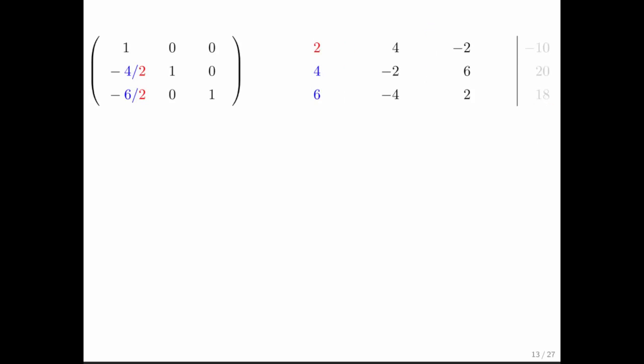So what we can do is compute our entries in our Gauss transform, apply the Gauss transform to only the part of the appended system to the left of the vertical line, in other words, to the matrix. And then we can do that again. We can compute the entries in the Gauss transform, apply it, and we're left with an upper triangular matrix.